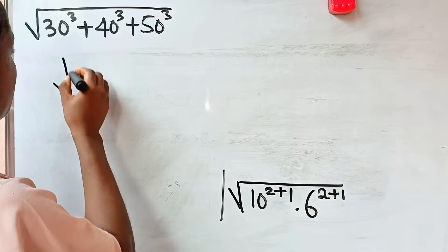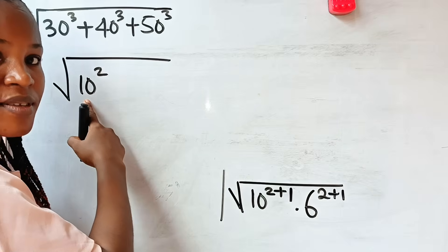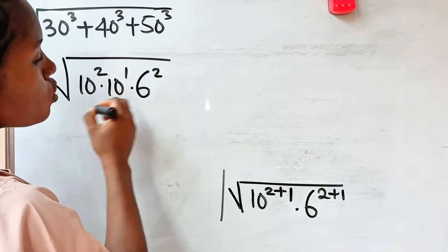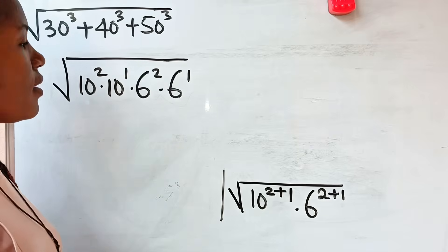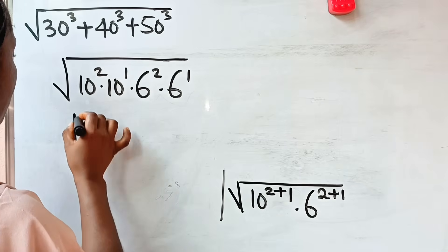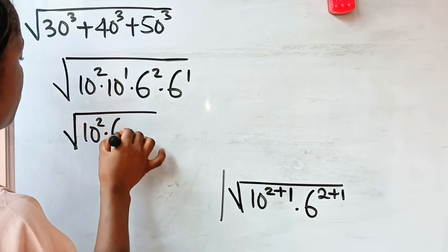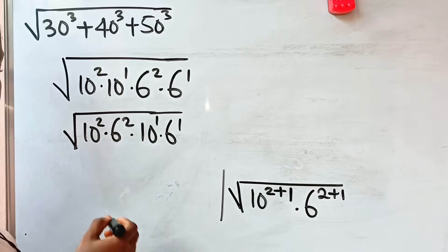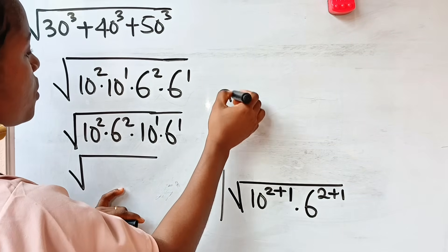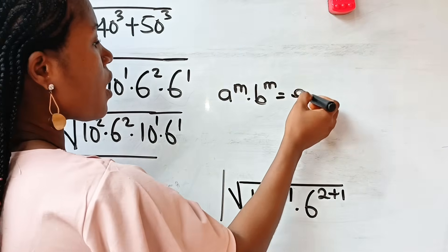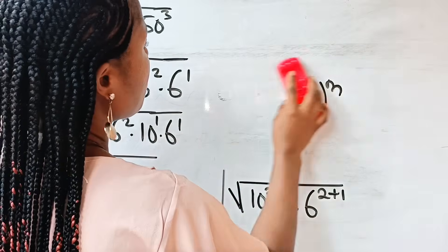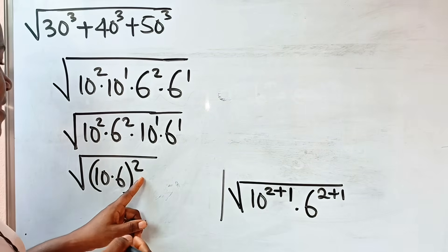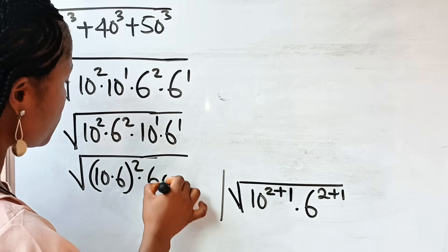So we can write this as square root of 10 to the power of 2 — we have found our first square — multiplied by 10 to the power of 1, then multiplied by 6 to the power of 2 multiplied by 6 to the power of 1. Now we bring out the squares and group them together. So we have square root of 10 squared multiplied by 6 squared, then multiplied by 10 to the power of 1 multiplied by 6 to the power of 1, which is essentially 10 multiplied by 6.